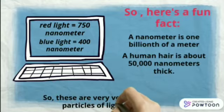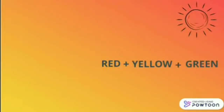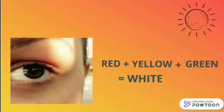So these are very tiny particles of light. The red light, yellow and the green one together form white which passes straight into our eyes.